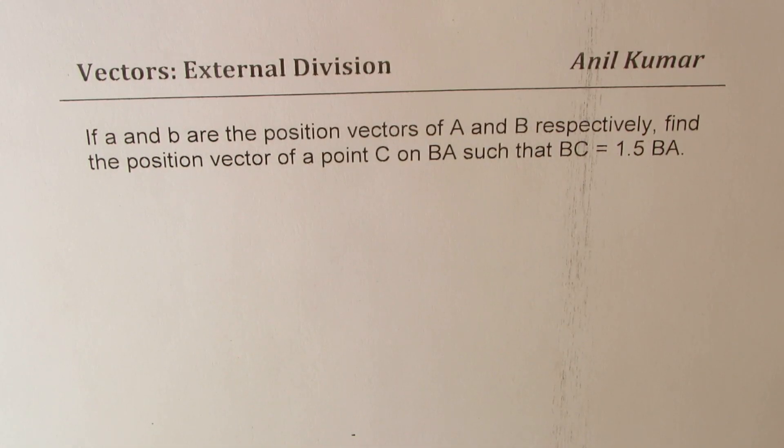I'm Anil Kumar sharing with you a very important test question on external division of segment using vectors. If a and b are the position vectors of A and B respectively, find the position vector of a point C on BA such that BC equals 1.5 BA.